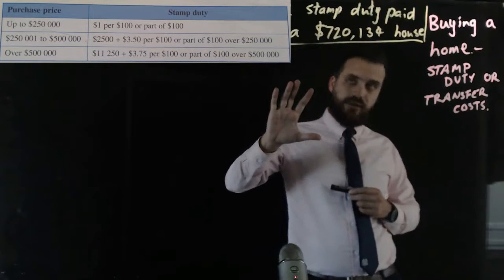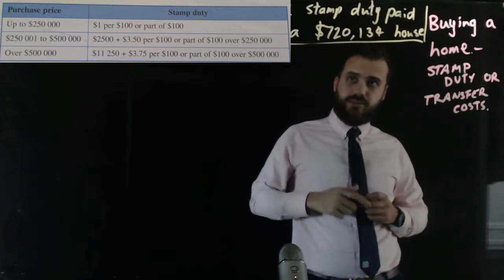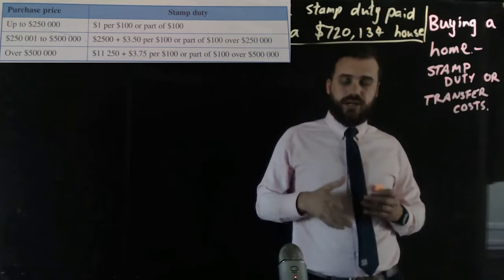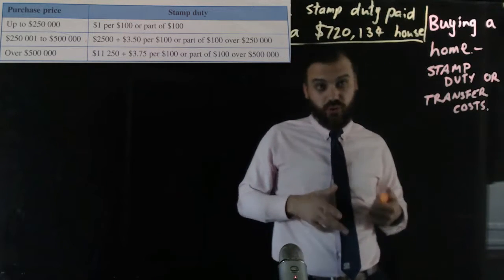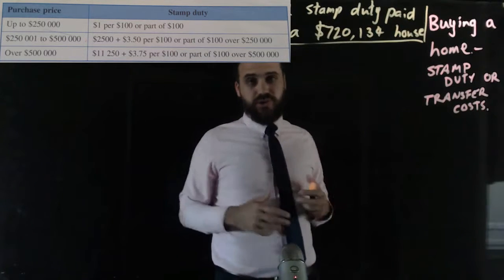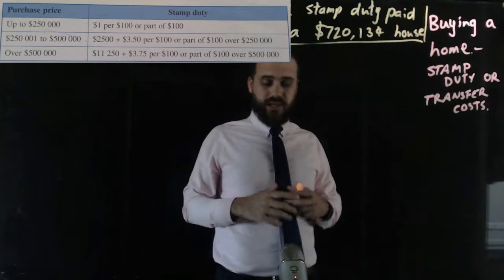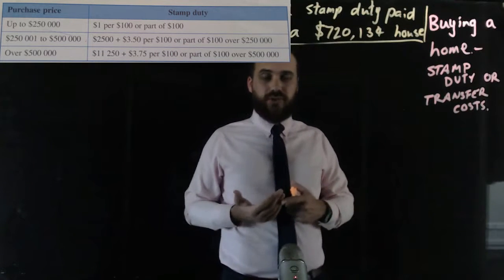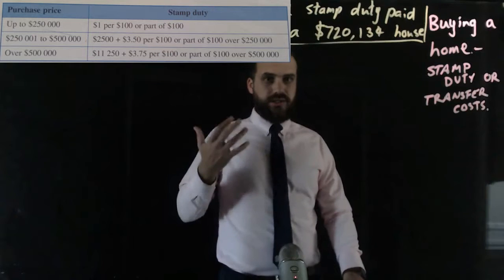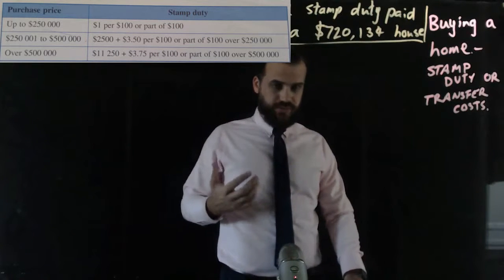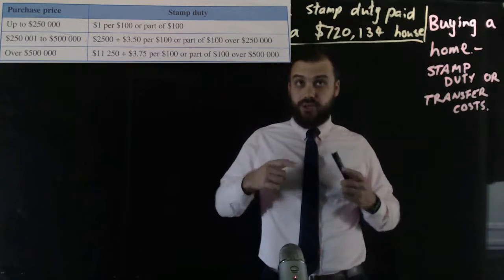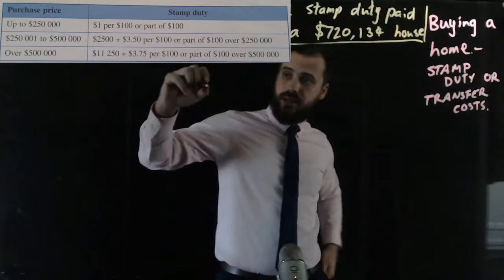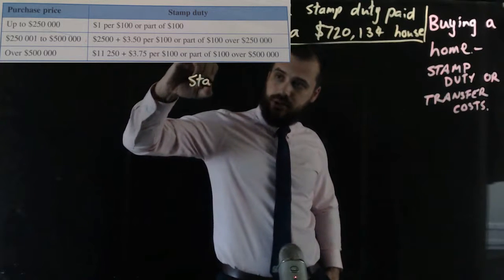Let's look at this question: find the stamp duty paid on a seven hundred and twenty thousand, one hundred and thirty-four dollar house. I've chosen a pretty unusual number here, but that will allow us to look at a few of the different things when it comes to stamp duty.